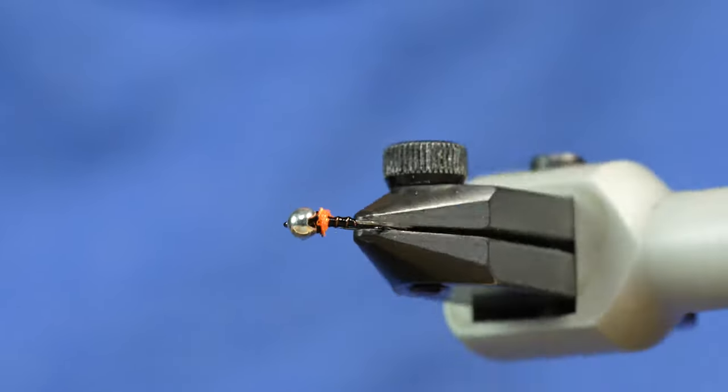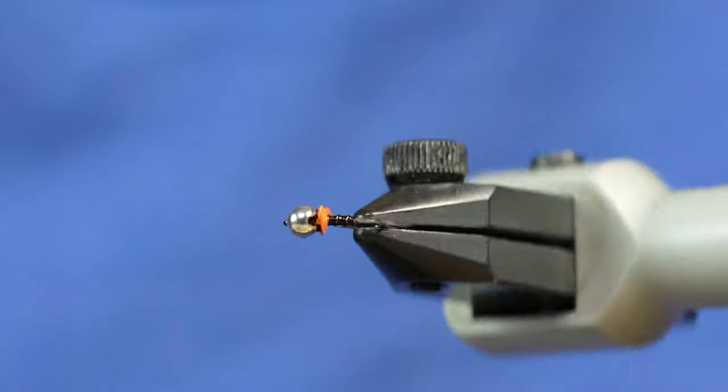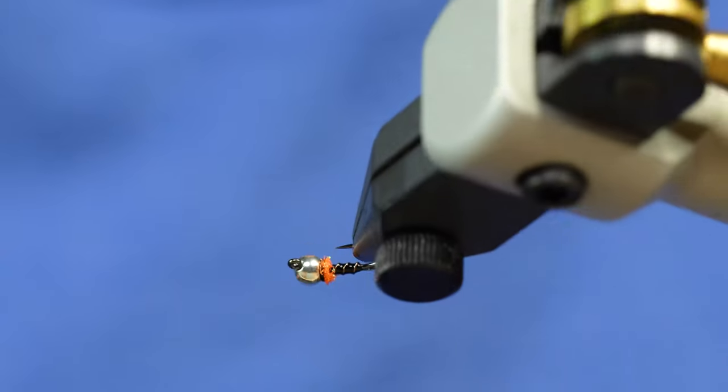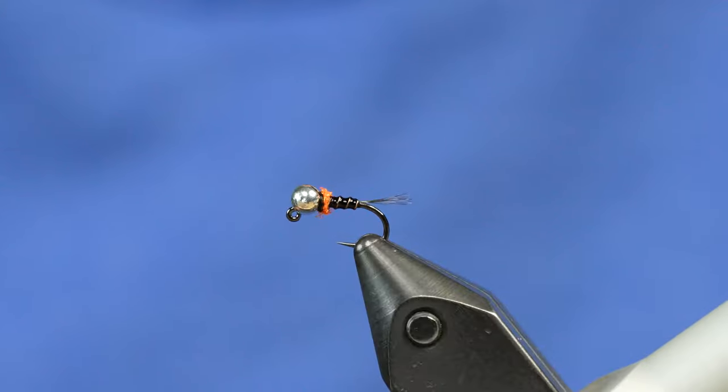We have the Black Thread Frenchie. This is another pattern you could do in lots of colors. We've already shown you the Olive Thread Frenchie. This is a black one. We do one in brown. You can do them in all kinds of color combinations. This has been a proven one for me. Again, you could fish it on a nymph rig, with an indicator, with a Euro rig, or a dry and a dropper. Super quick, super easy, super durable, the Black Thread Frenchie.